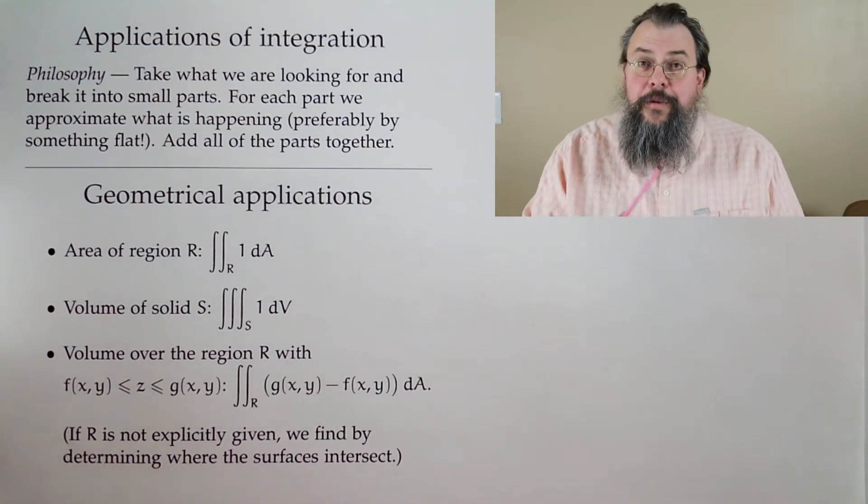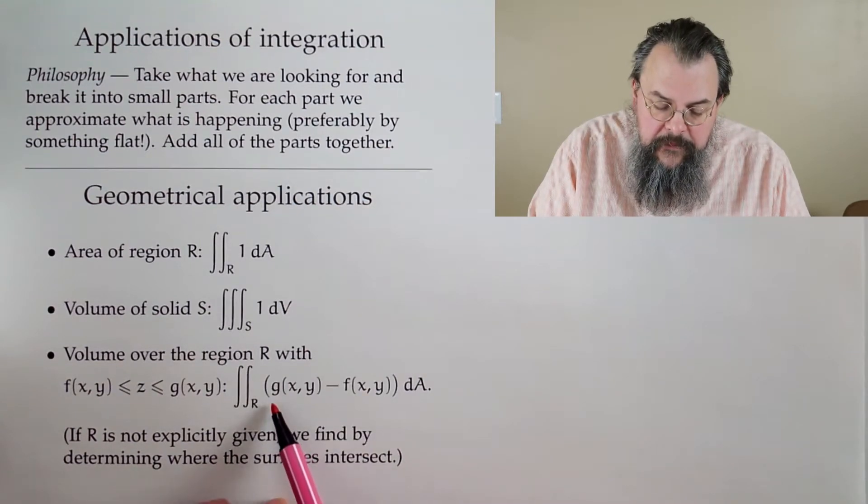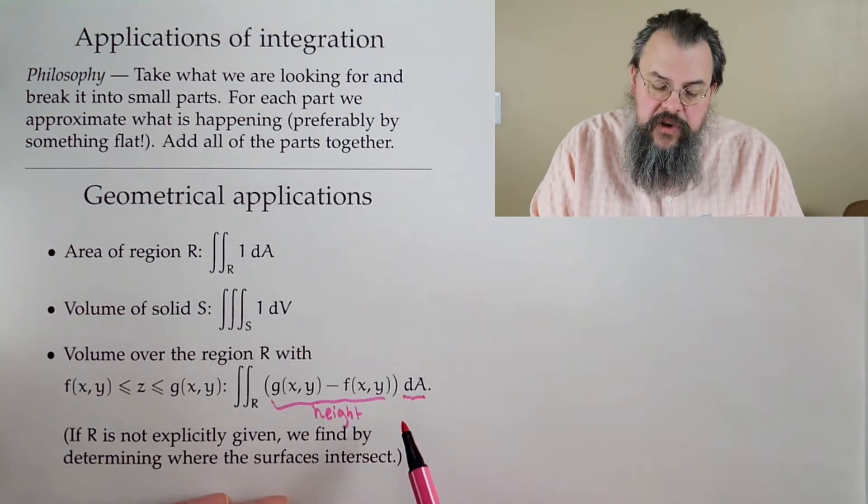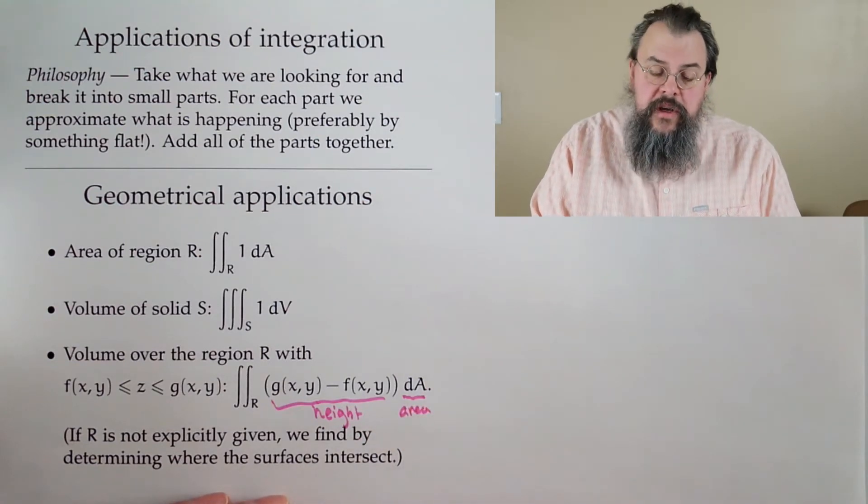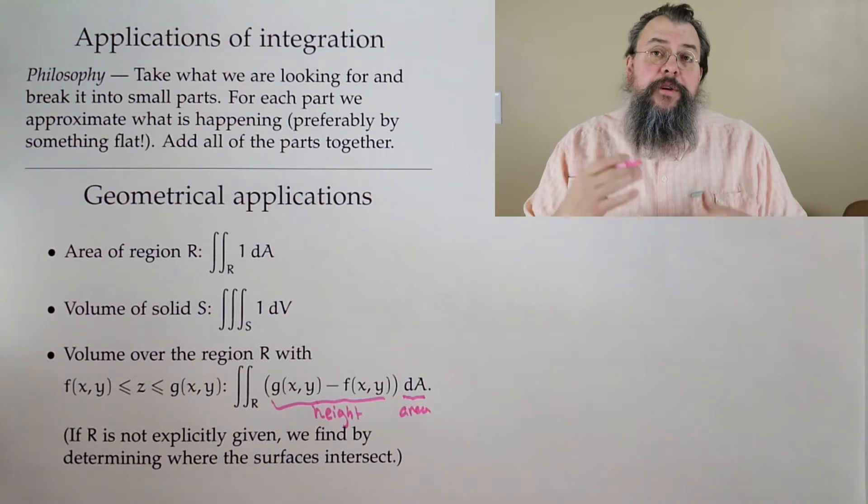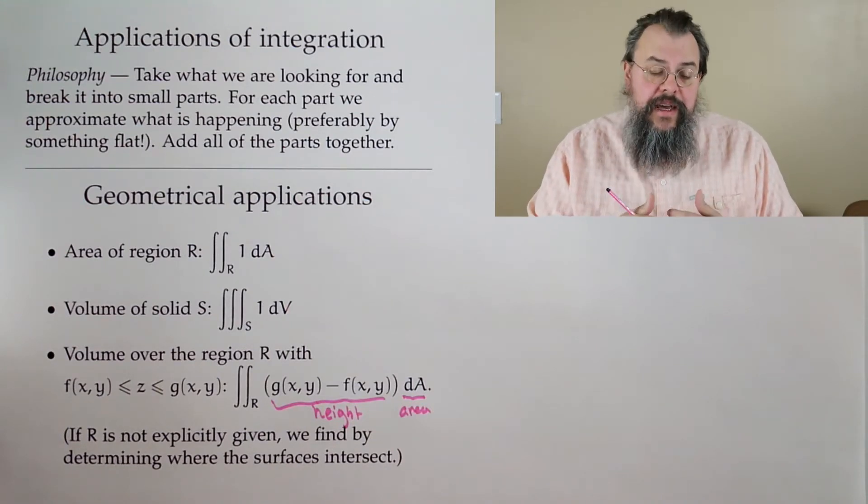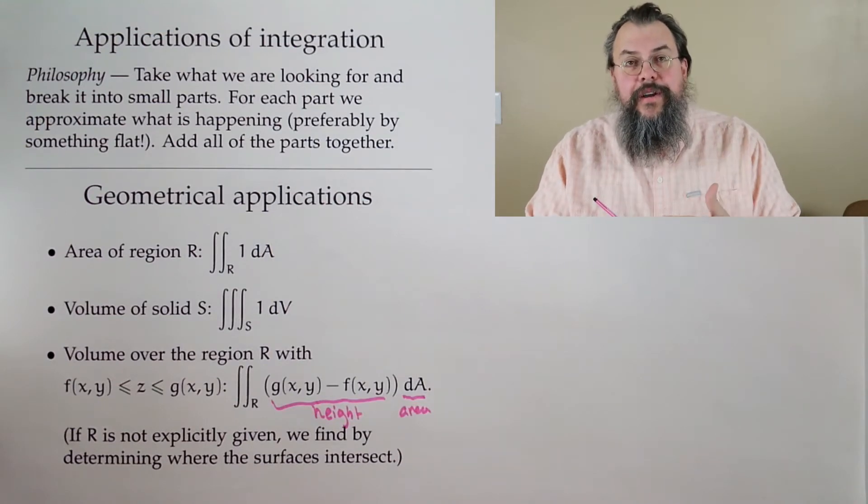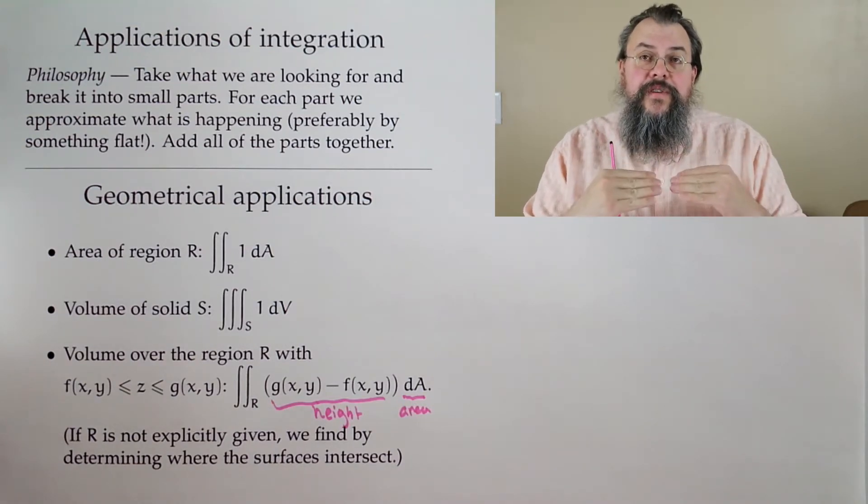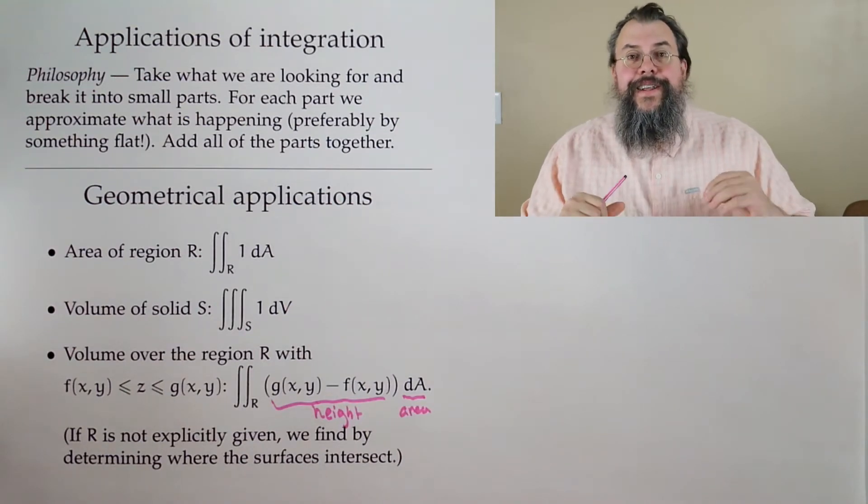What's the volume? The top minus the bottom. This is like height, and you have a little bit of area. If you take a height times an area, that's a volume. So this is a piece of volume, add up all the volume, and we're good to go. Now one thing that often happens when you have questions like this, it may not be the case that they're explicitly saying what R is. So if R is not given, we find R. Set the two surfaces equal to each other. Where do they intersect? That will indicate where you should look for R.